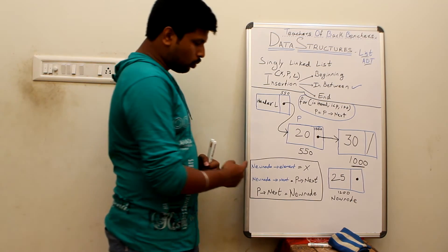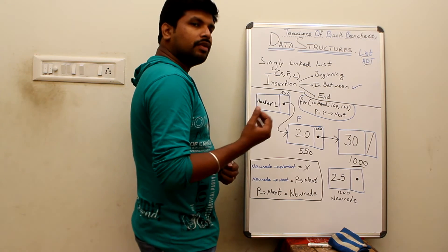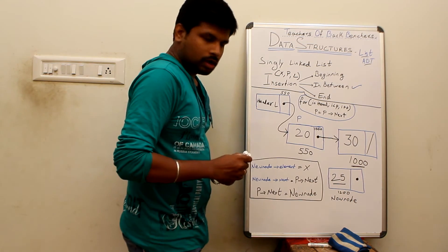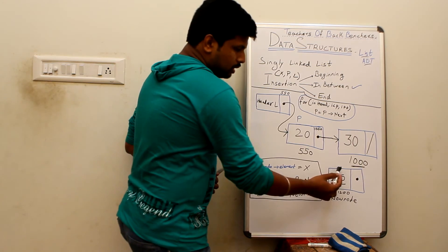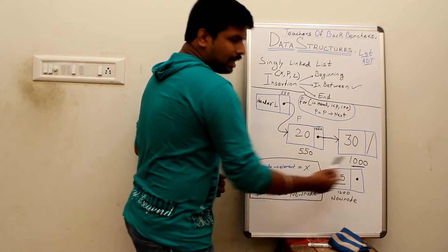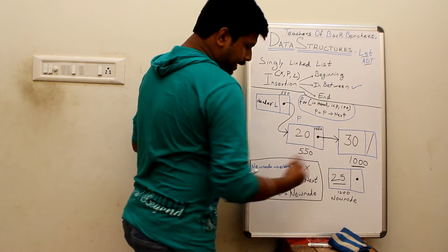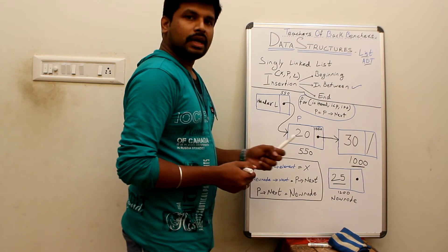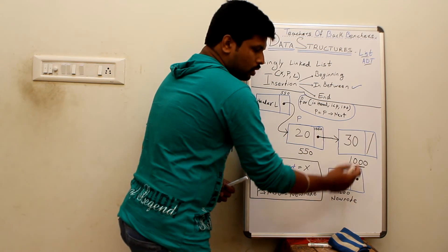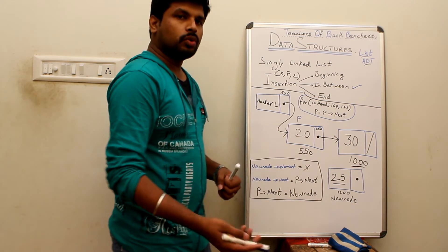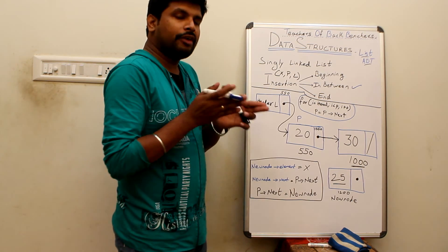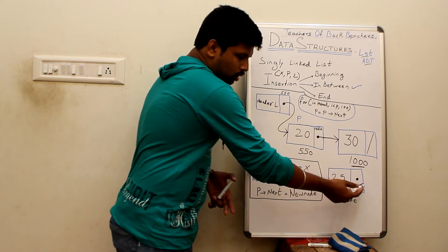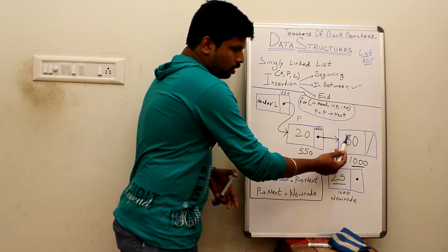To insert the new node we follow three steps. Step 1: new node's element equals x, which is 25 — this assigns the value to the new node. Step 2: new node's next is set to p's next value. Since p's next is already pointing to address 1000 (which holds 30), we assign that address to the new node's next pointer, linking the new node to 30.